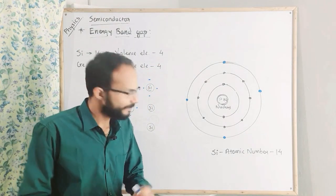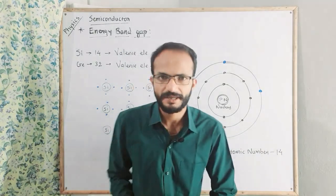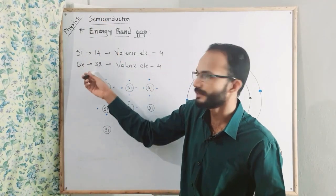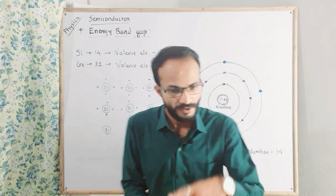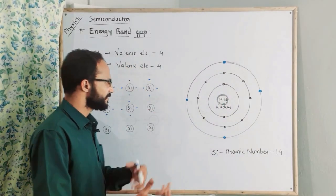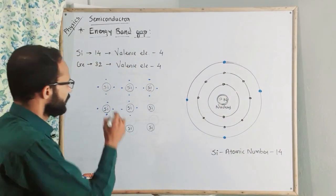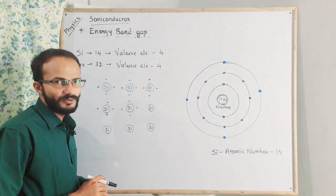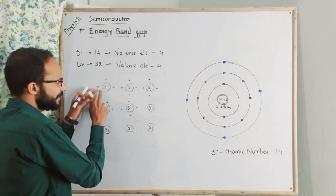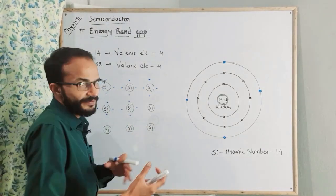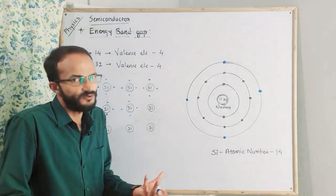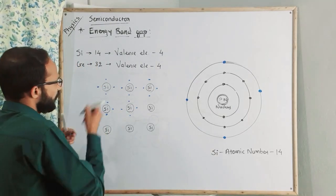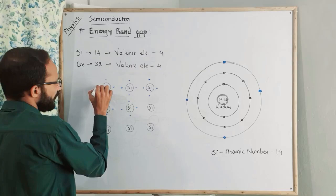So this is how the atomic model is. The most important examples of silicon and germanium — I have studied. The atomic model shows how many valence electrons each has — and in both cases the answer is four.